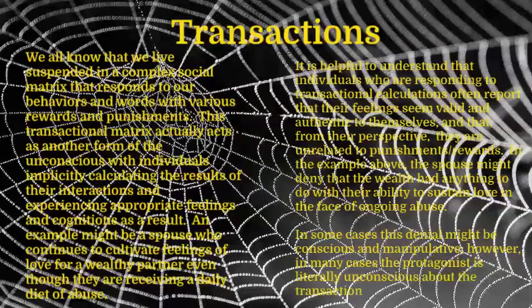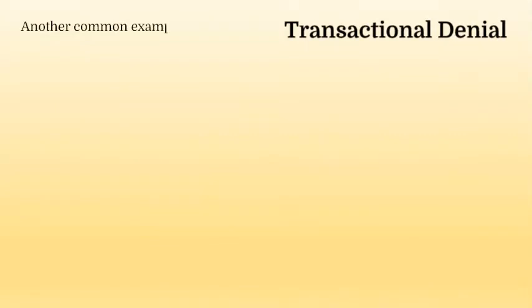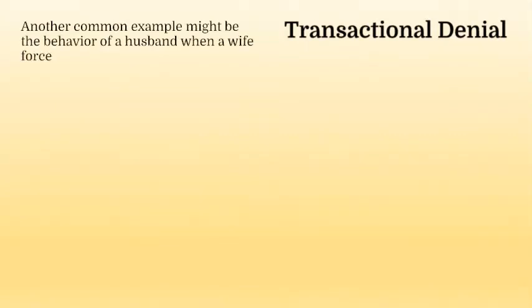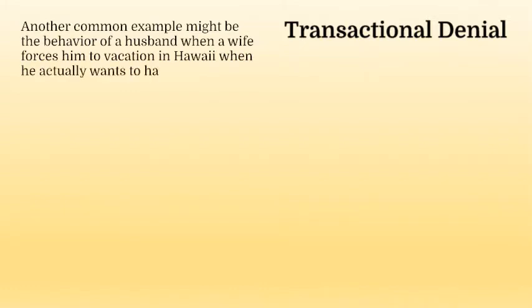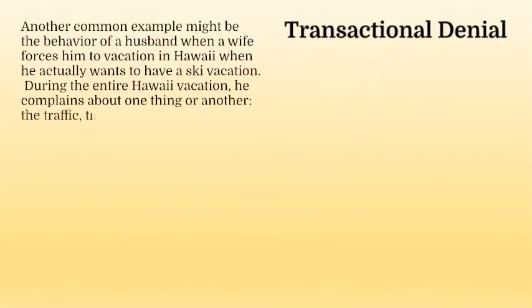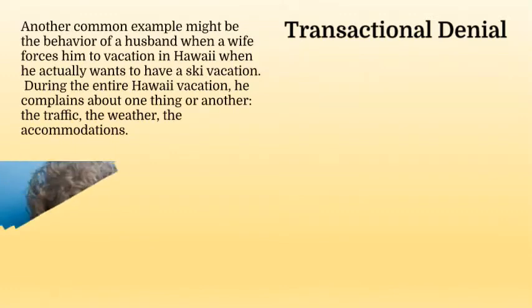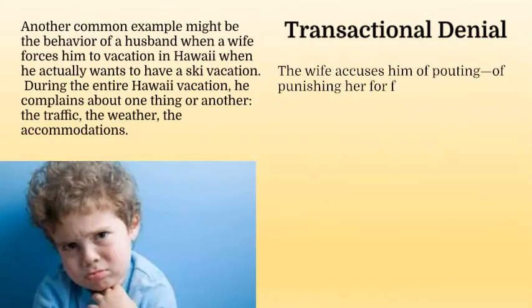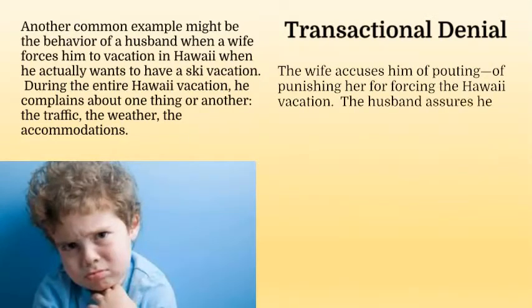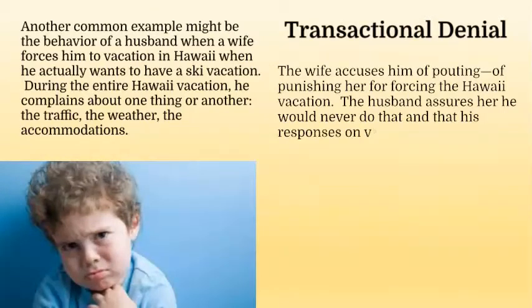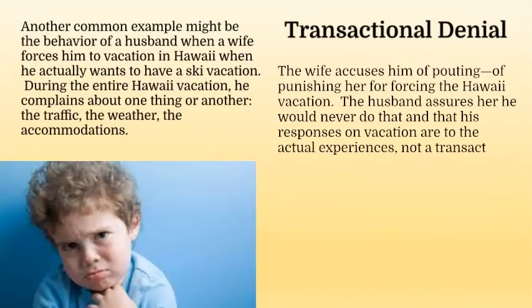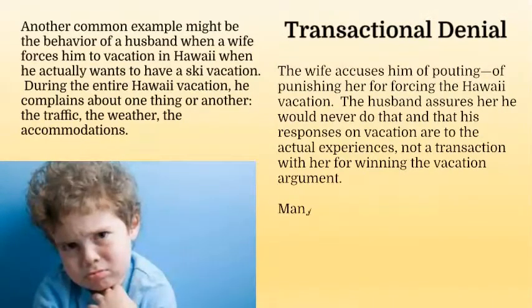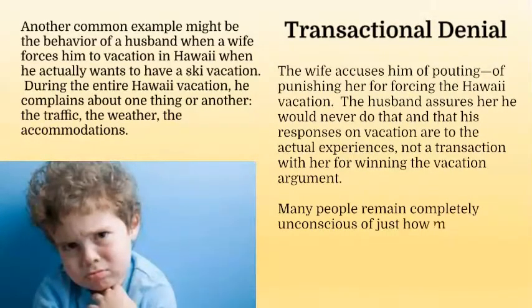Transactional Denial. Another common example might be the behavior of a husband when a wife forces him to vacation in Hawaii when he actually wants to have a ski vacation. During the entire Hawaii vacation, he complains about one thing or another — the traffic, the weather, the accommodations. The wife accuses him of pouting, of punishing her for forcing the Hawaii vacation. The husband assures her he would never do that, and that his responses on vacation are to the actual experiences, not a transaction with her for winning the vacation argument. Many people remain completely unconscious of just how many of their feelings and behaviors are transactions, as opposed to independent responses to one's environment.